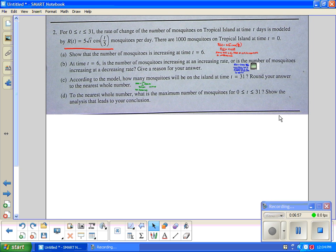To the nearest whole number, what is the maximum number of mosquitoes for 0 ≤ t ≤ 31? Show the analysis that leads to your conclusion. They want a max. A max occurs if you have a critical point. A max also occurs through the first derivative rule when there's a change.